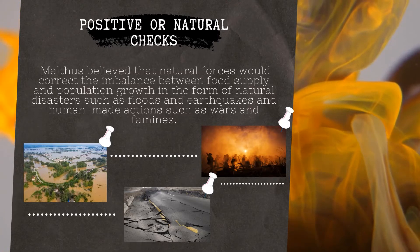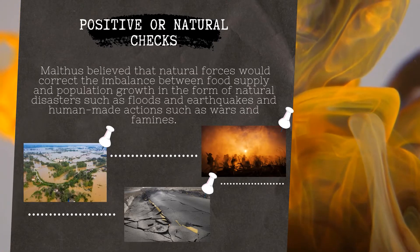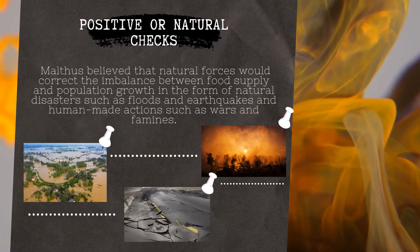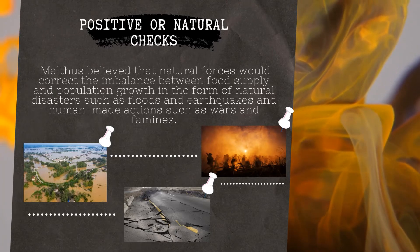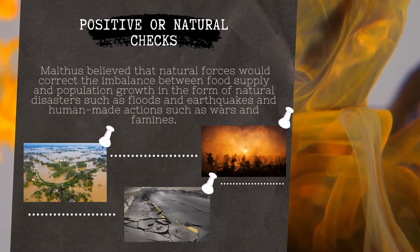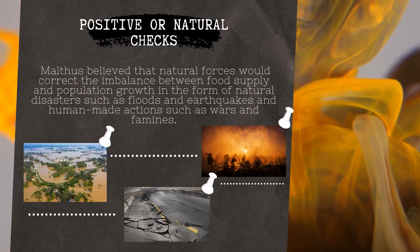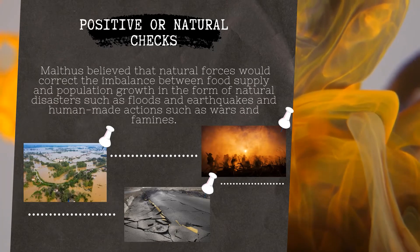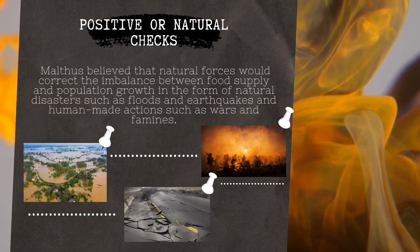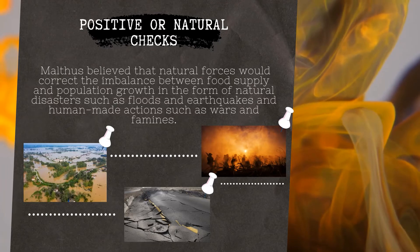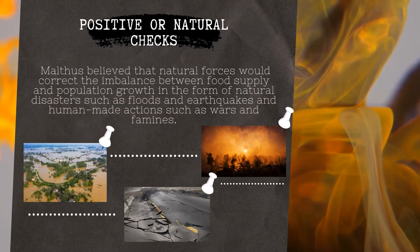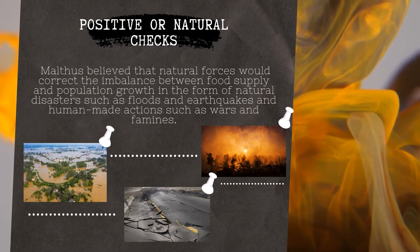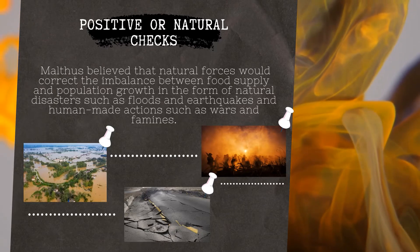With an increasing population, shortage of food is becoming a problem, making many people suffer. According to Malthus's theory, the remedy for this would occur as natural and preventative checks. Natural checks, from the word natural itself, signifying nature, rely on natural forces to correct the imbalance between population and food supply growth. It may be in the form of floods, earthquakes, and even man-made issues such as war and starvation.